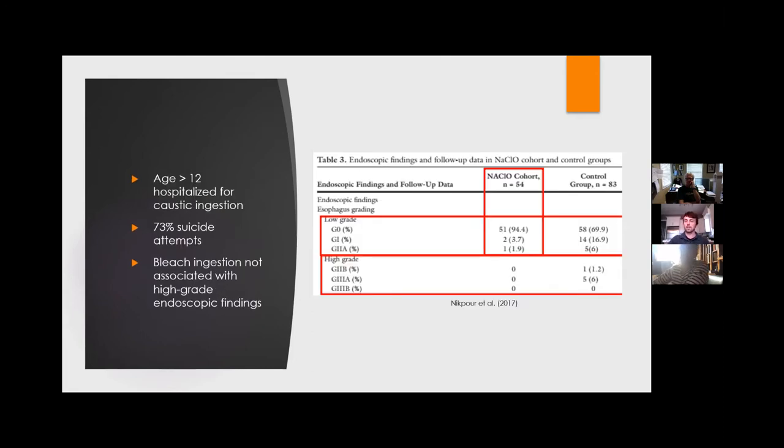A much more recent 2017 study retrospectively compared 137 patients ages 12 and up with caustic ingestion. This is a more emerged relevant population. Most of these ingestions were suicide attempts. And you can see there that the authors compared bleach ingestion to a control group, the control group consisting of all other patients with caustic ingestion. The bleach group did comparatively a lot better. 95% of patients had no signs of any esophageal injury on endoscopy, and none of them had any high-grade injury. Compared to the control group, 7% of those patients developed high-grade esophageal injury and six patients actually died in the control group.